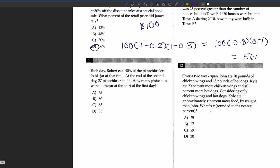Question 12: Over a two week span, John ate 20 pounds of chicken wings and 15 pounds of hot dogs. Kyle ate 20 percent more chicken wings and 40 percent more hot dogs. Kyle ate approximately x percent more food by weight than John. What is x? For Kyle, we calculate 1.20 times 20 pounds for chicken wings, getting 24 pounds, and 1.40 times 15 for hot dogs, getting 21 pounds.